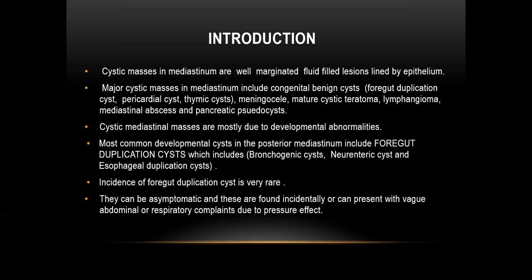Cystic masses are mostly due to developmental abnormality. The most common developmental cysts in the posterior mediastinum include foregut duplication cysts, which includes bronchogenic cysts, neurenteric cysts, and esophageal duplication cysts. The incidence of foregut duplication cysts is very rare. However, they are almost asymptomatic and are found incidentally, or they can present with vague abdominal or respiratory complaints due to their pressure effect.